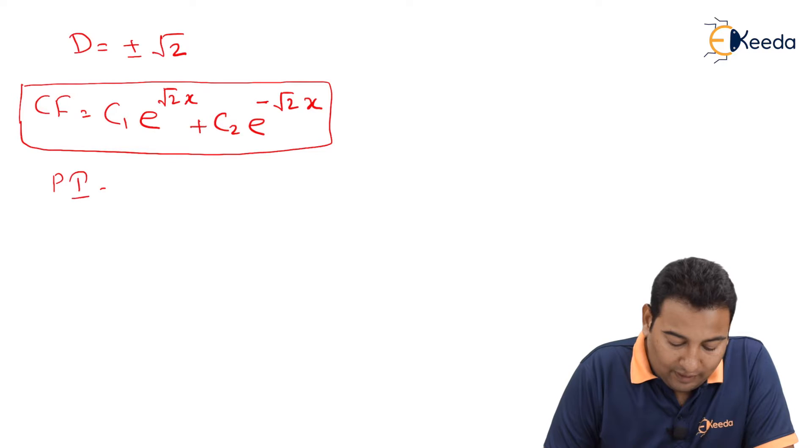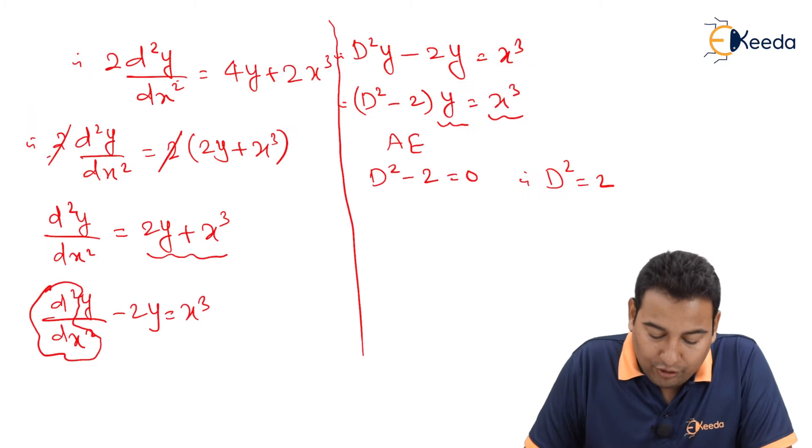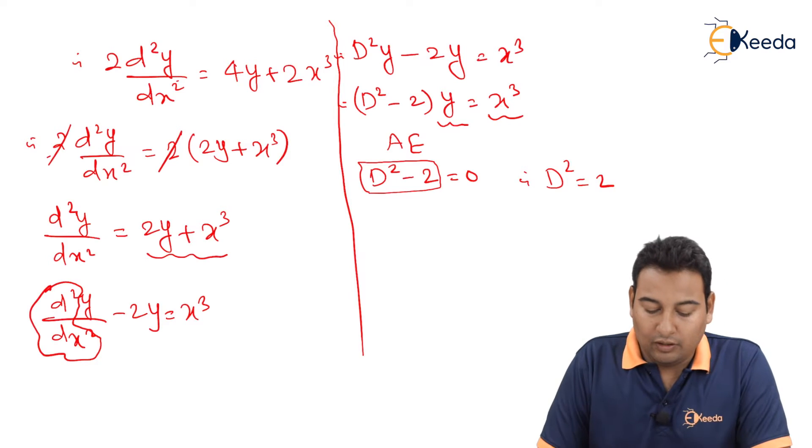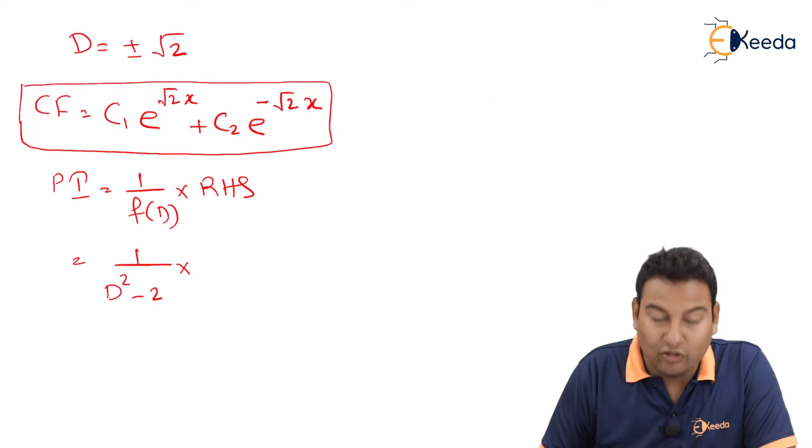Now my aim is to find a PI: 1/f(D) into RHS. f(D) means auxiliary equation, if you see here, D² minus 2 into RHS.